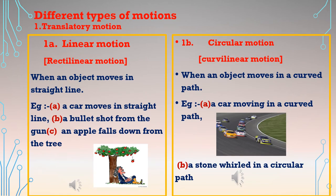Linear motion, also called rectilinear motion, is when an object moves in a straight line. For example, a car moving on a straight path, a bullet shot from a gun, or an apple falling from a tree — all are examples of rectilinear or linear motion.